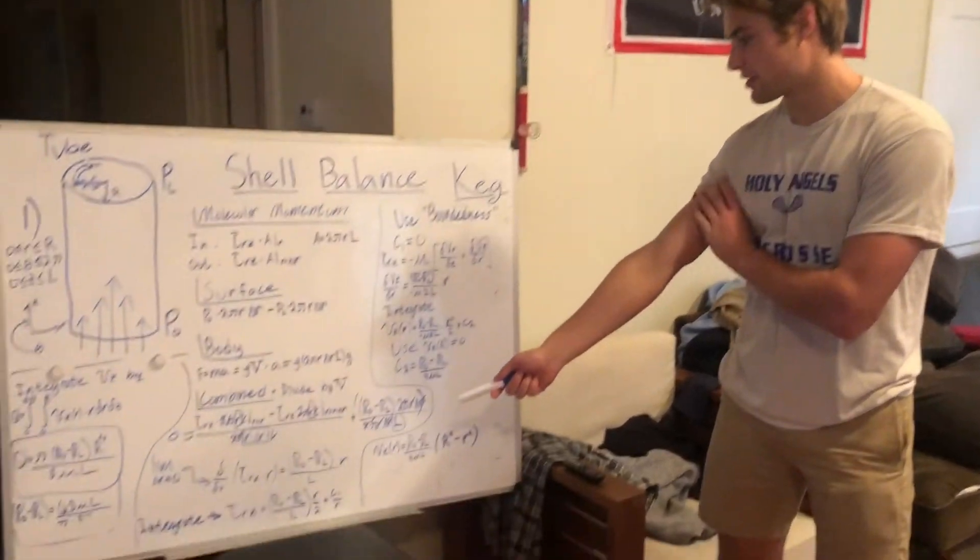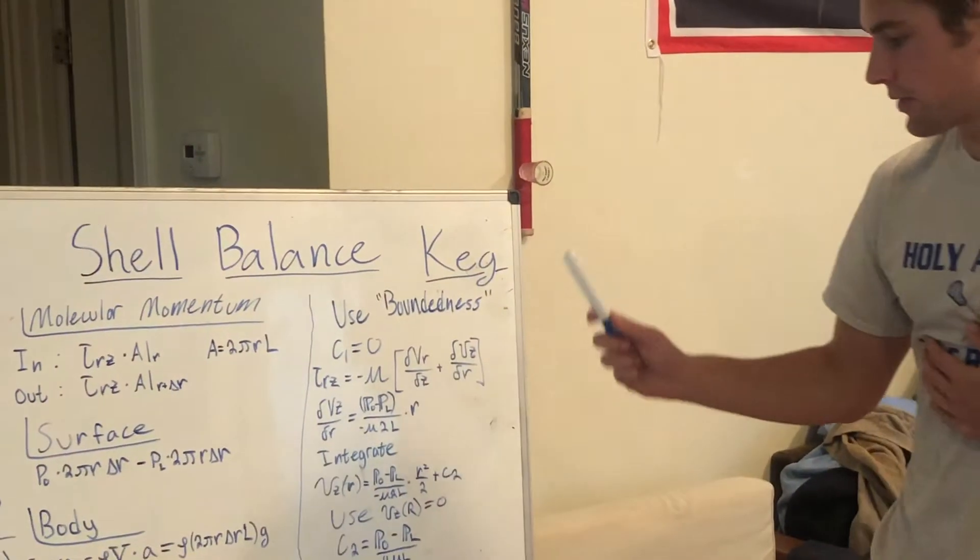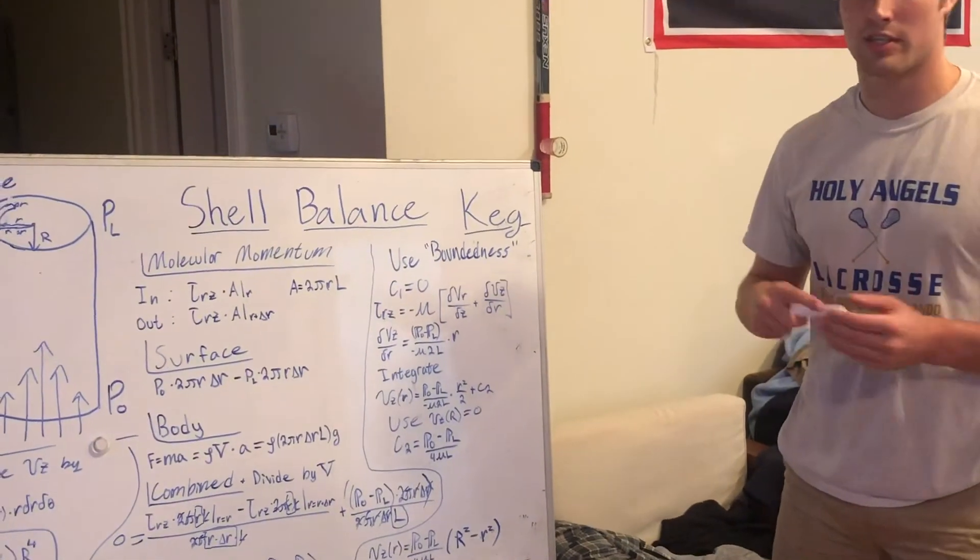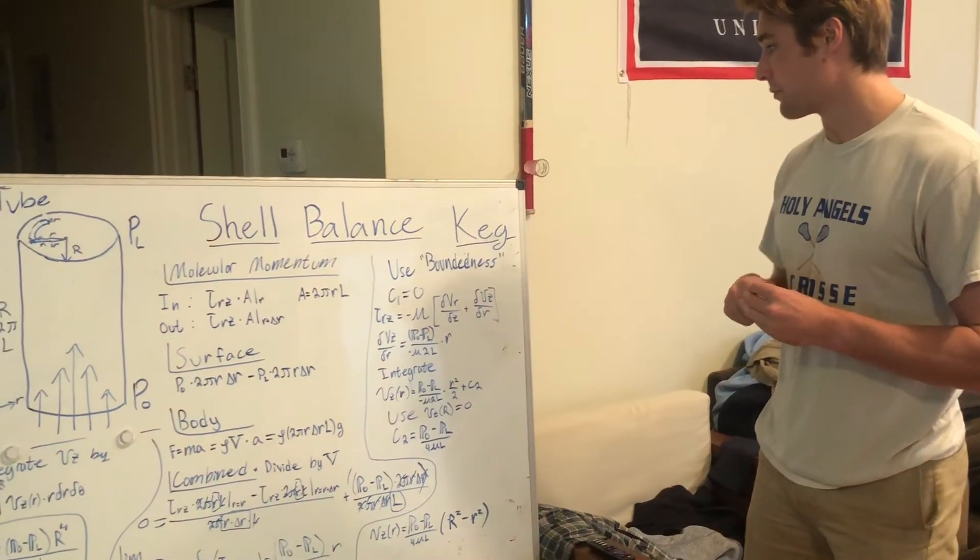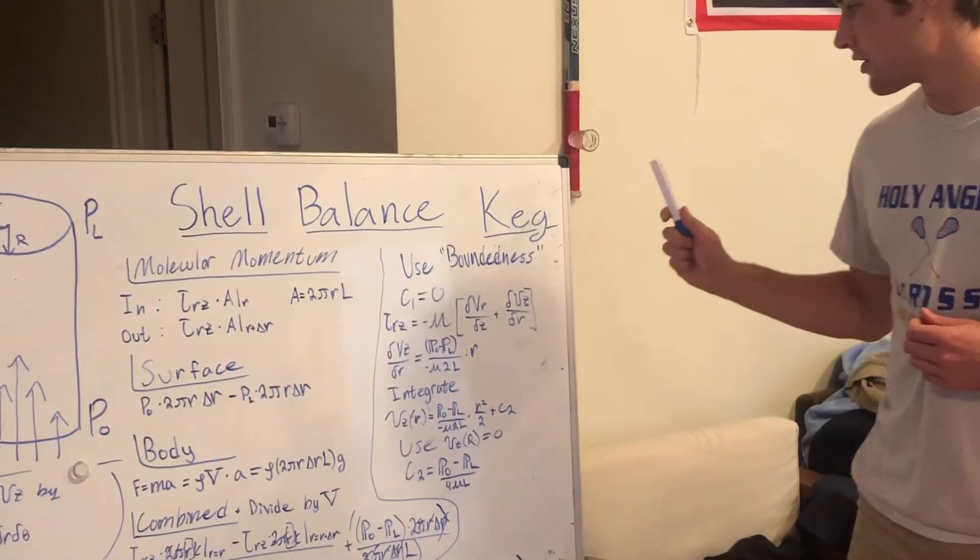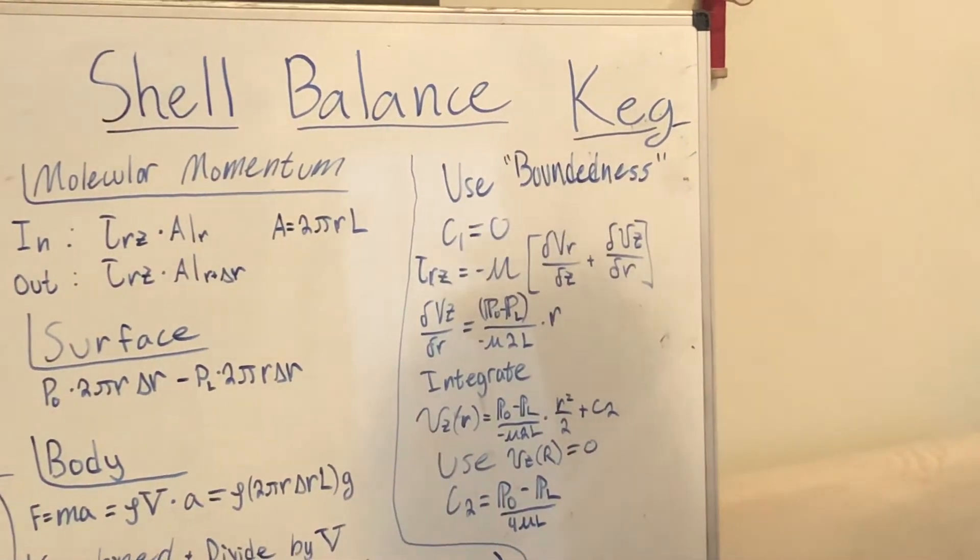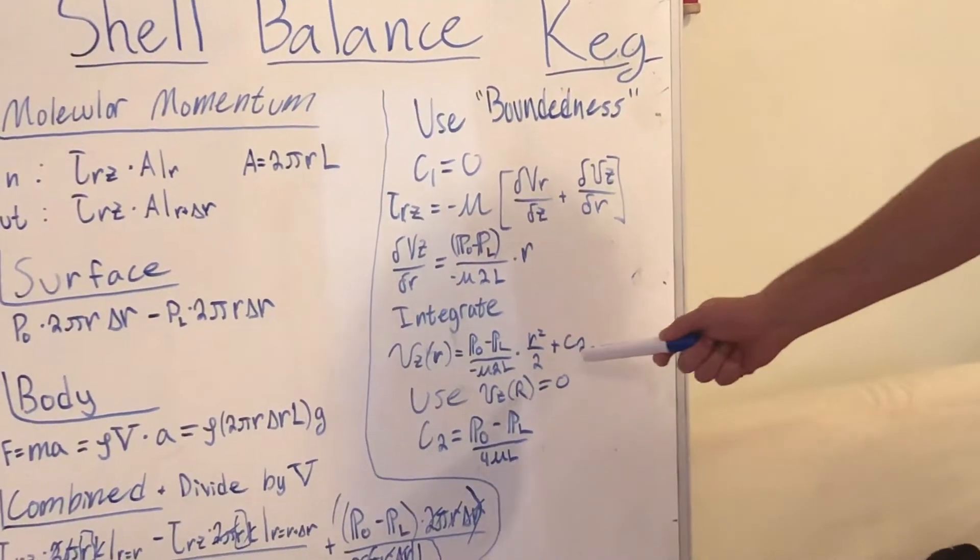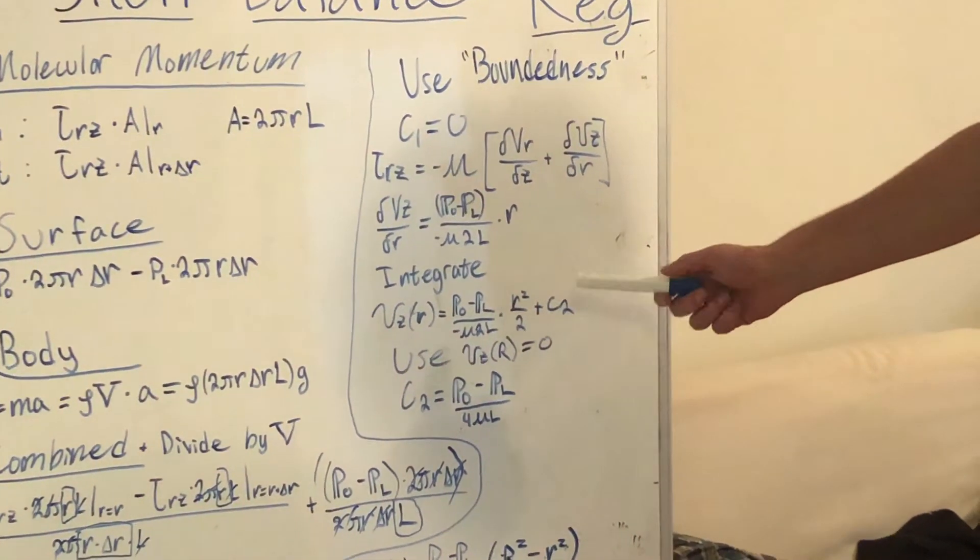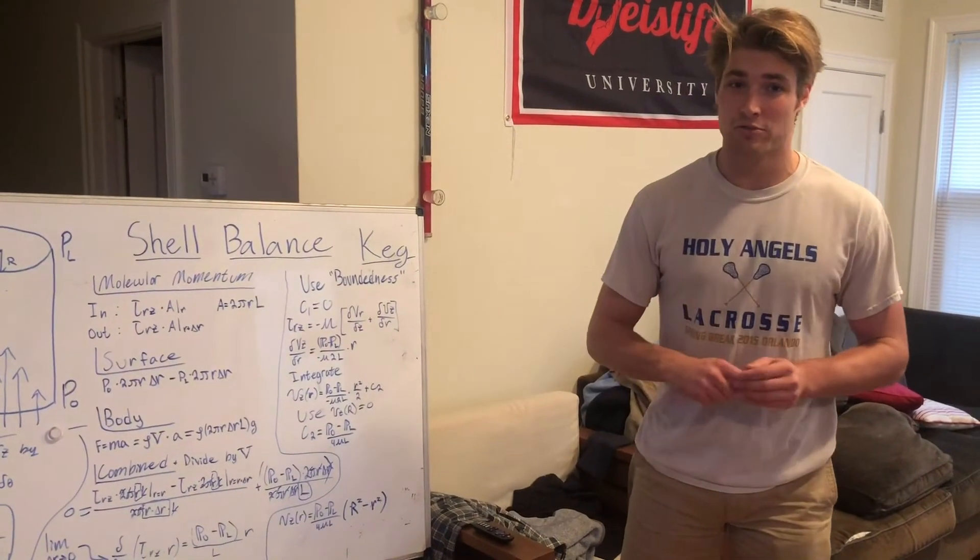Alright, now to solve our stress equation for the constant, we need to use our boundedness theory, which states that because r, if we would have an issue, if r goes to 0, we would have an issue there, because you can't divide by 0, and we know that stress isn't an infinite term. So we can assume that our constant number 1 is 0. And now, by using our Newtonian definition of stress, we can solve for another differential equation of velocity. So now, if we integrate again, we find that it is this pressure gradient over negative μ, which is viscosity, times 2L over r squared over 2, plus our second constant.